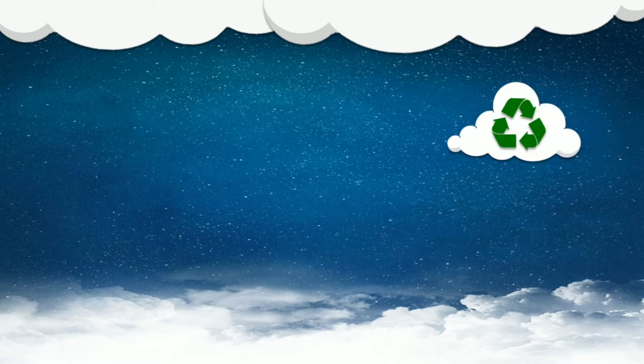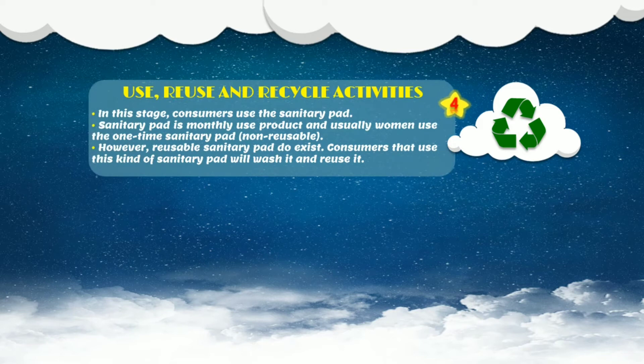Moving on to the next stage, it is on the use, reuse, and recycle activities of sanitary pad. In this stage, consumers use the sanitary pad. Sanitary pad is a monthly use product and usually women use the one-time, non-reusable sanitary pad, as women go through menstruation once a month. However, reusable sanitary pads do exist too — consumers that use this kind will wash it and reuse it.